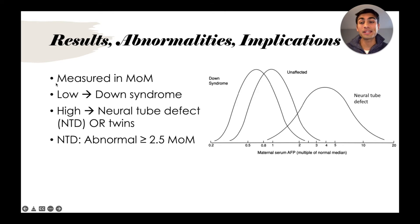If the MSAFP is low, that can indicate Down syndrome. However, if it's high, that can indicate a potential neural tube defect (abbreviated NTD) or it can signal the presence of multiple babies, such as in the case of twins.